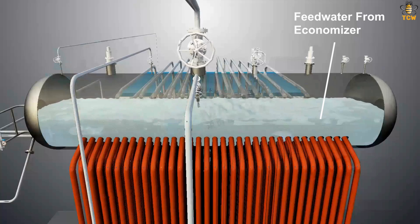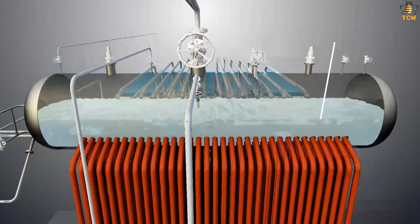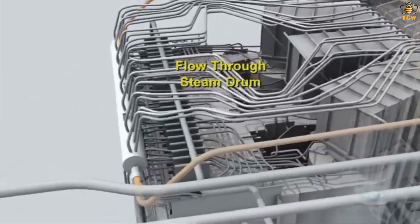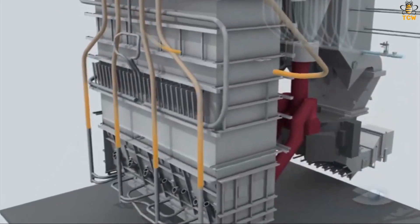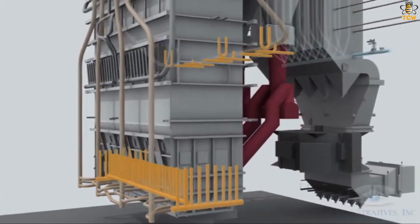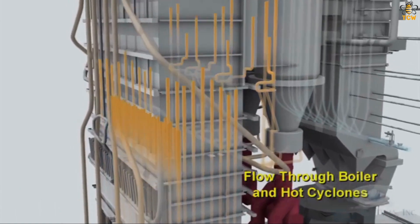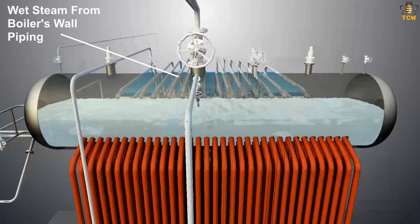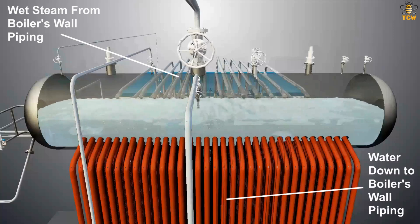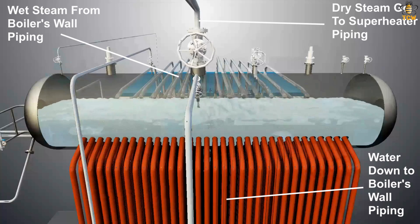In the steam drum, feed water gathers at the bottom of the drum and then flows through brown pipes under the drum. These brown pipes make up the walls of the boiler, so the sides of the boiler are an arrangement of these brown pipes. The feed water in the boiler wall pipes then absorbs heat from the hot gas from coal combustion, boils, and becomes saturated steam or wet steam. This saturated steam is flowed back to the top of the steam drum, where it undergoes phase separation. Water carried by the saturated steam falls and gathers at the bottom of the drum to be heated again, while the drier steam is flowed out to the superheater.